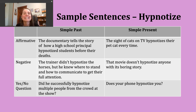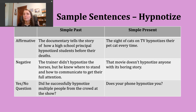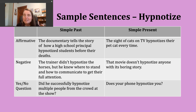The nice thing about simple past tense sentences is that the structure stays the same no matter what the subject is. In the affirmative, start with your subject and then use the -ed form of the verb. For example: 'The documentary tells the story of how a high school principal hypnotized students before their deaths.' While there's no time signal in this sentence, the story provides the dates and events — and this example ties back to the first definition of the verb.